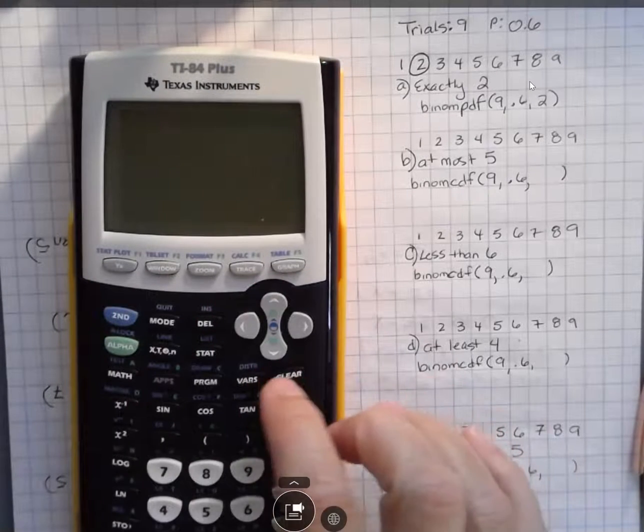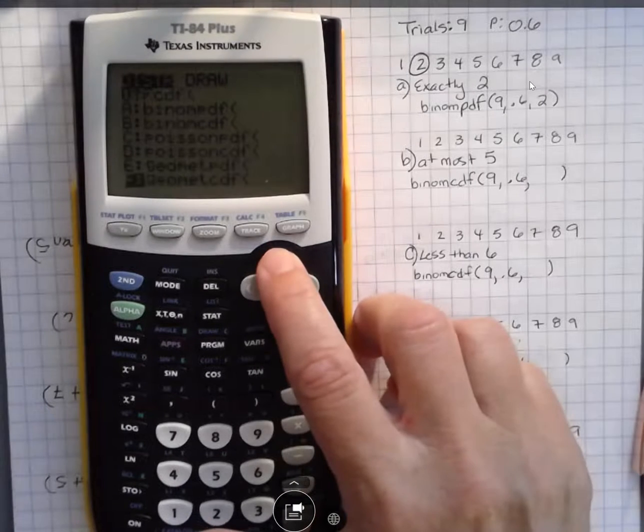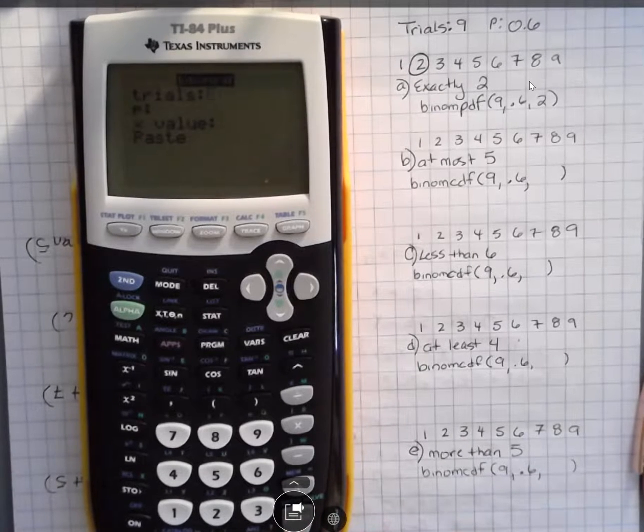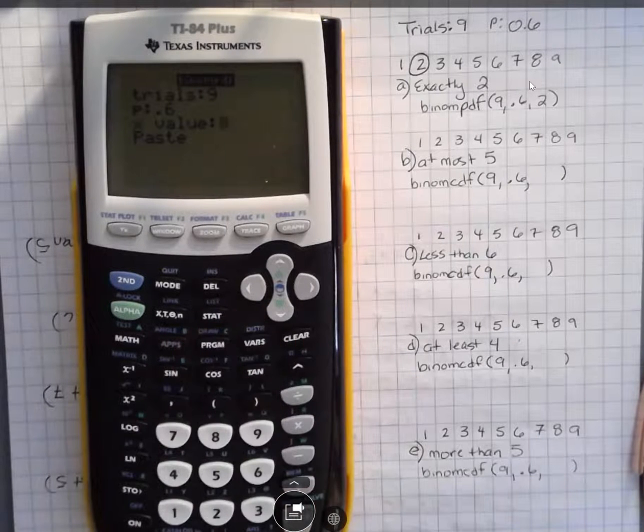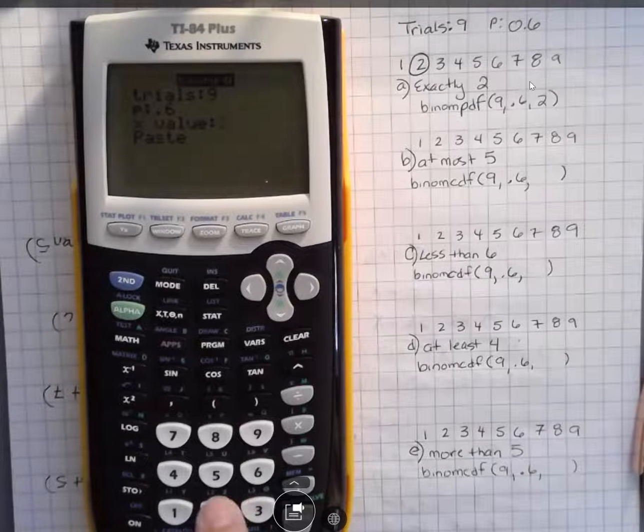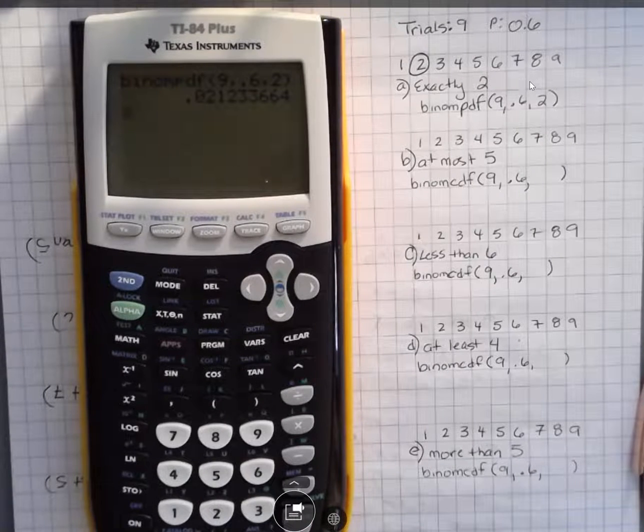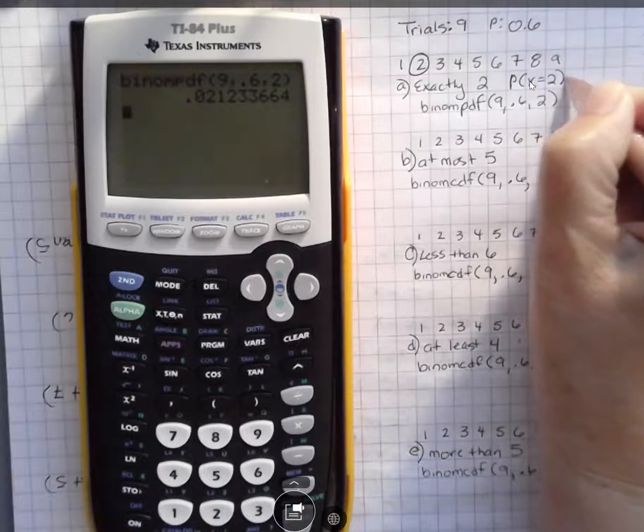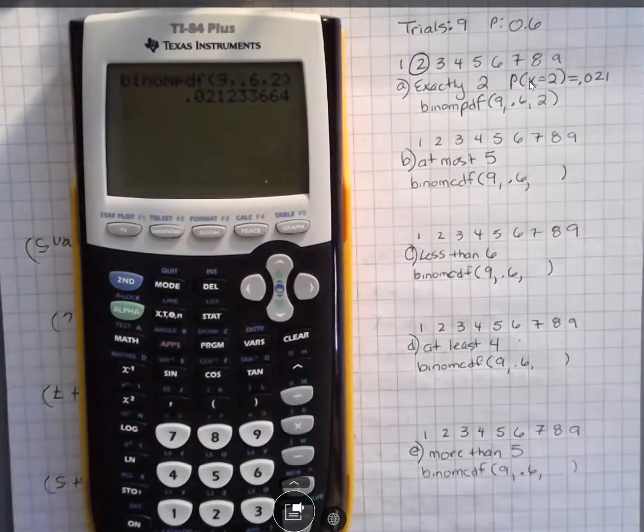We're going to enter second function distribution, which is over the VARS button. I'm going to scroll up. For a single value, we're going to use the PDF function. And we're going to hit enter. It's going to ask you how many trials do you have? 9. What is the probability of success? 0.6. And what X value? We've talked to 9 people and exactly 2 of them had this much debt. So our value is 2. And that's going to put that into that format. And this is the probability that you get. So exactly 2 means what's the probability that X equals 2? And that is about 0.021 or 2.1%.